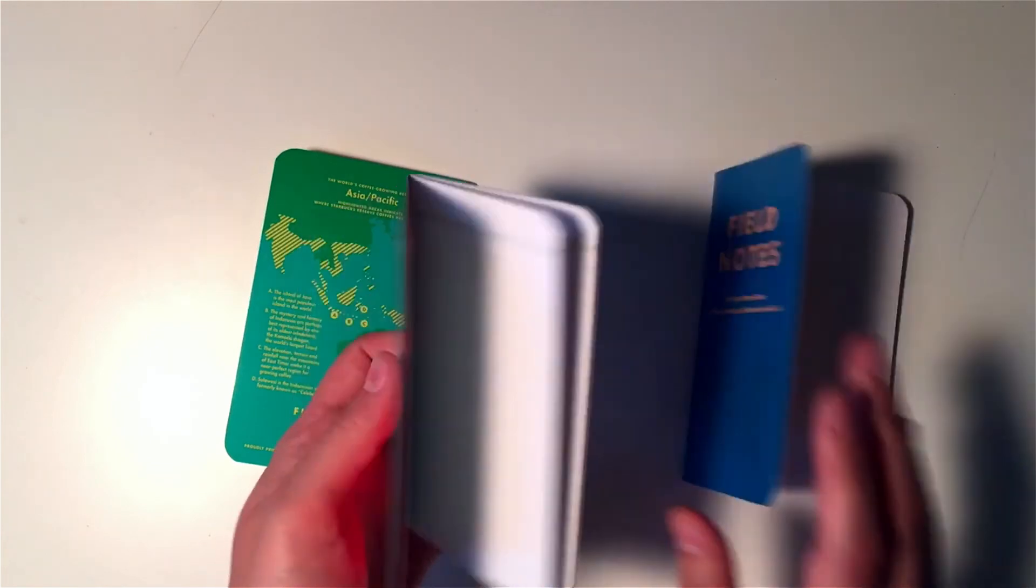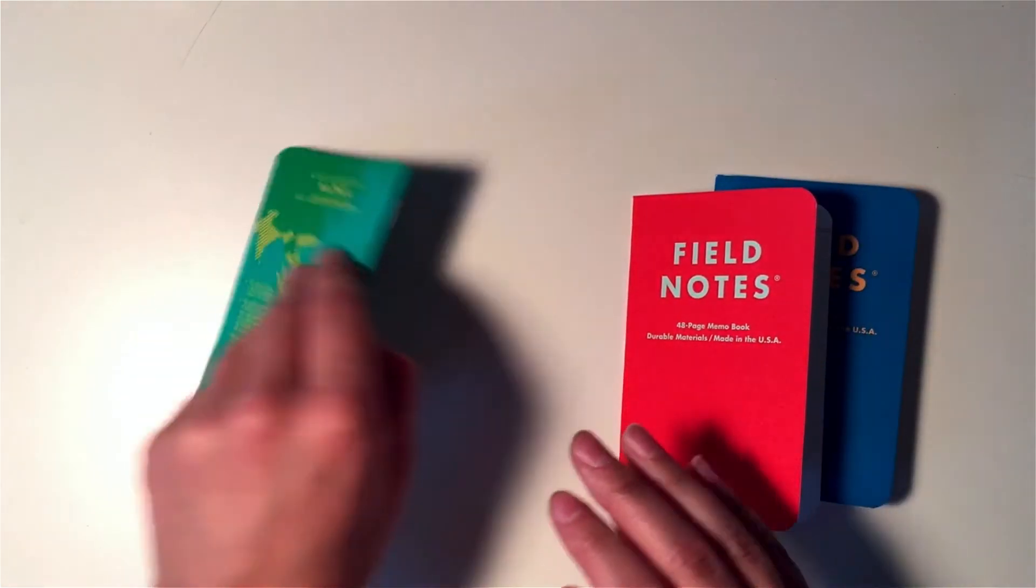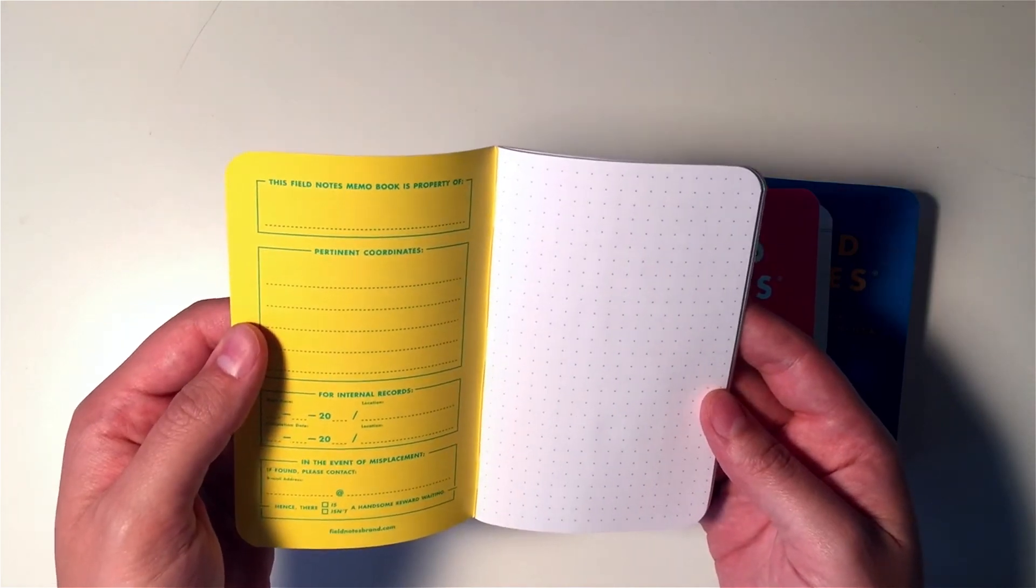So if these two are checkered and lined, this one must be dot grid. Yes, very nice.